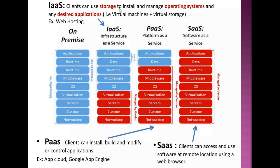With Infrastructure as a Service, a client can use storage to install and manage operating systems and any desired applications. With Platform as a Service, a particular platform can be rented for developing software. With Software as a Service, clients can access and use software at remote locations using a web browser.